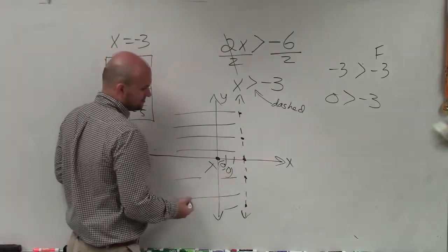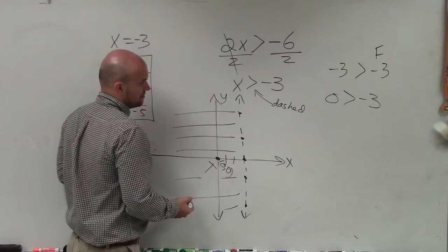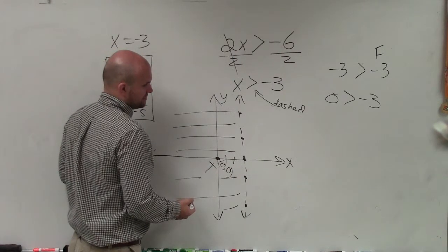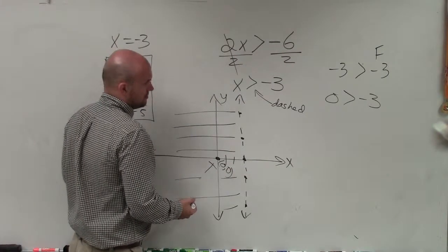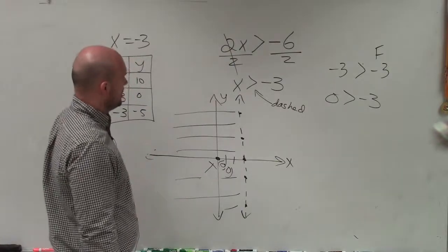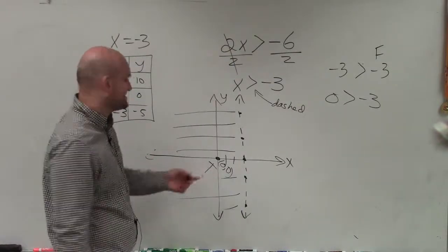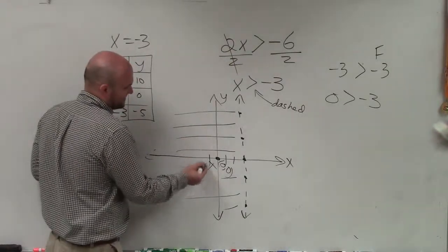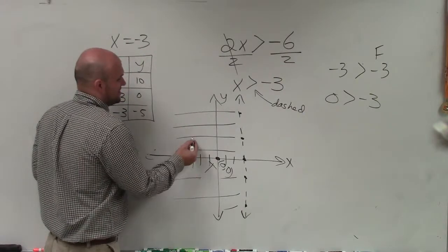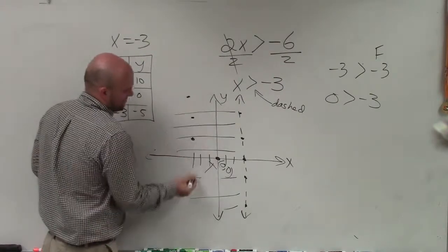For instance, 0 is going to be true. 0, oh my god, I graphed that wrong. That's positive 3, right? Negative 1, 2, 3. So negative 3. I'm sorry, I was thinking of 3. My bad.